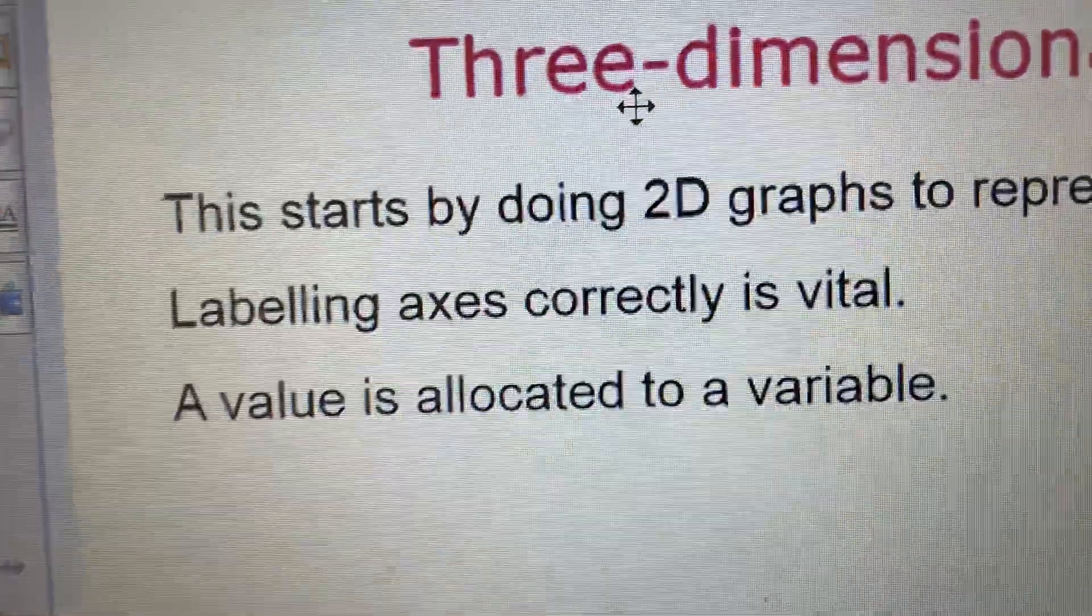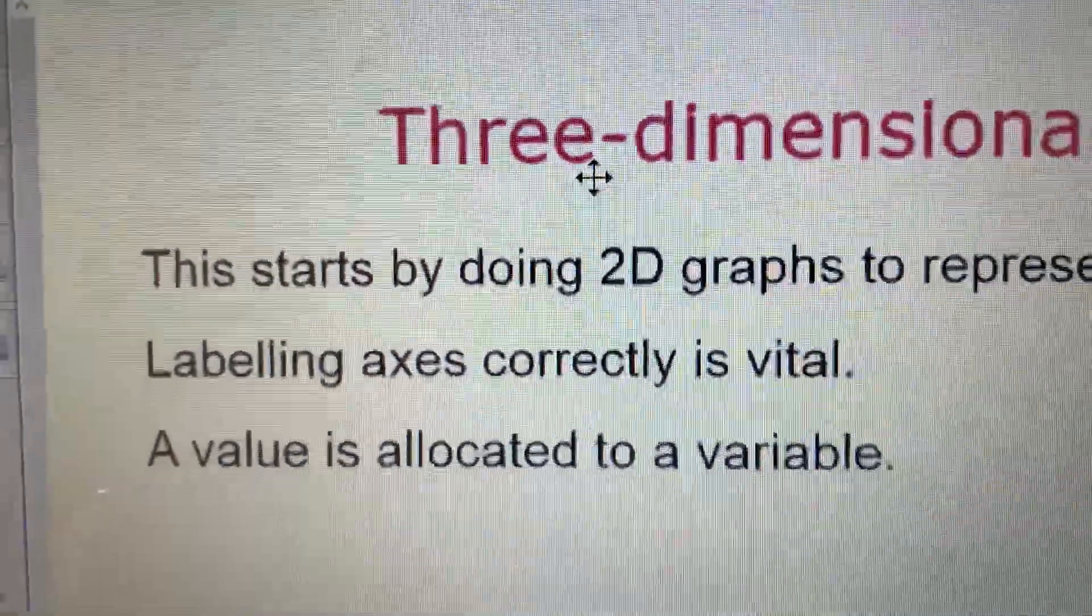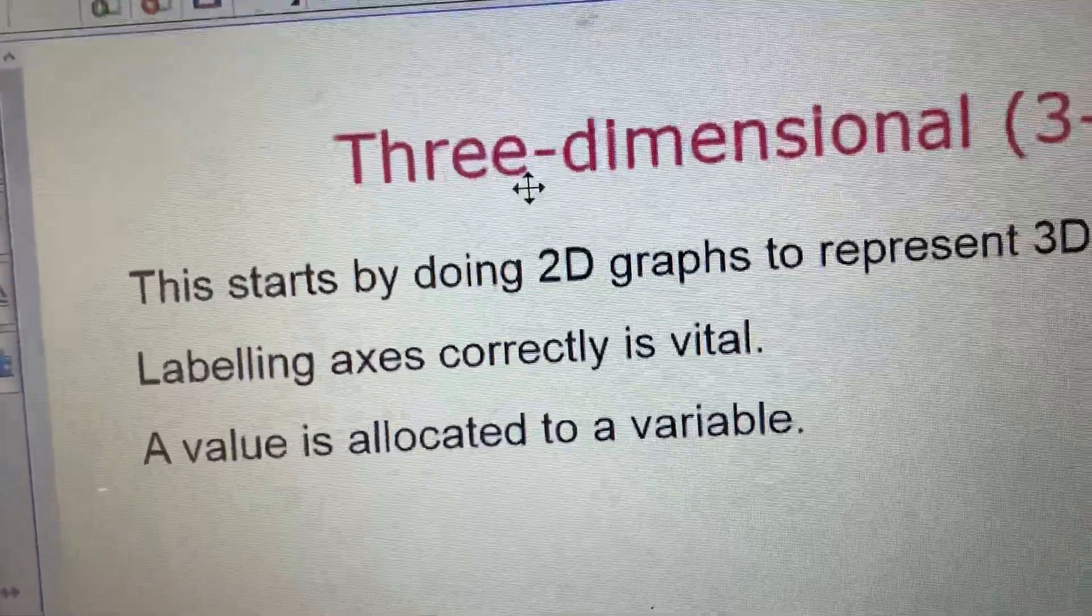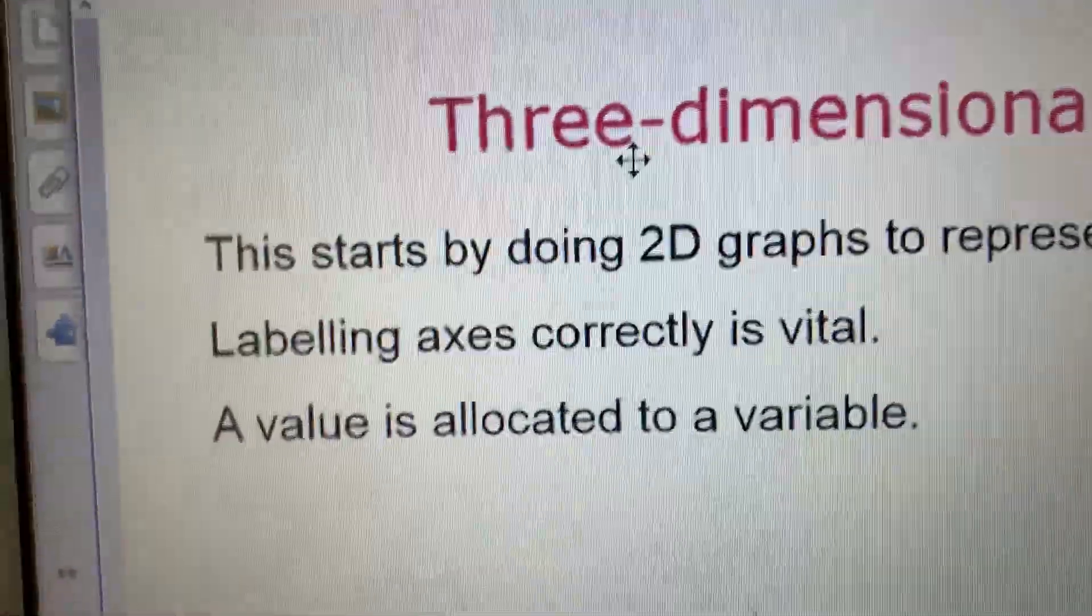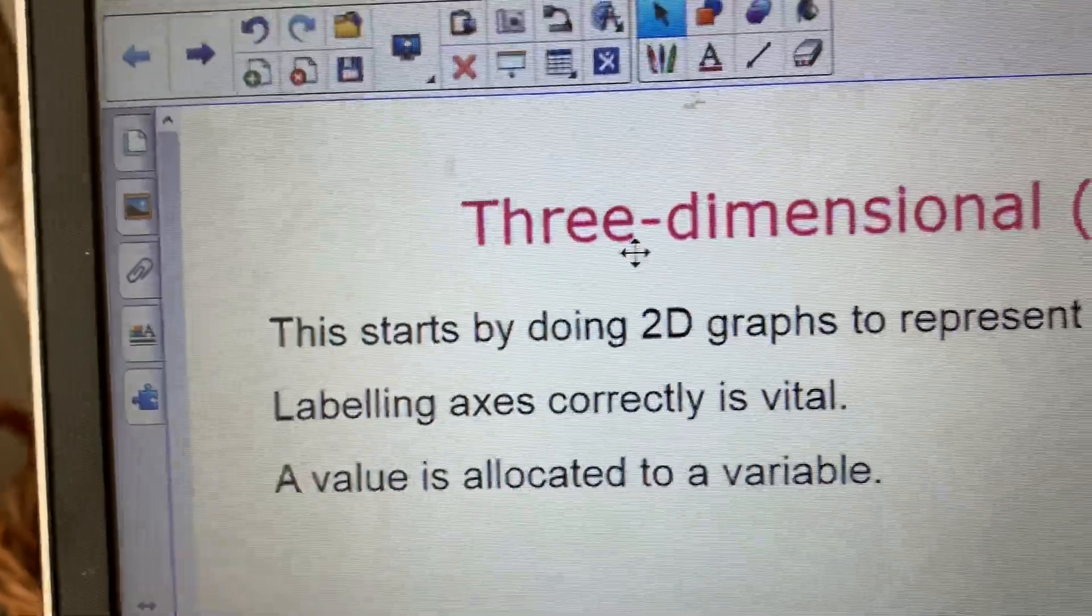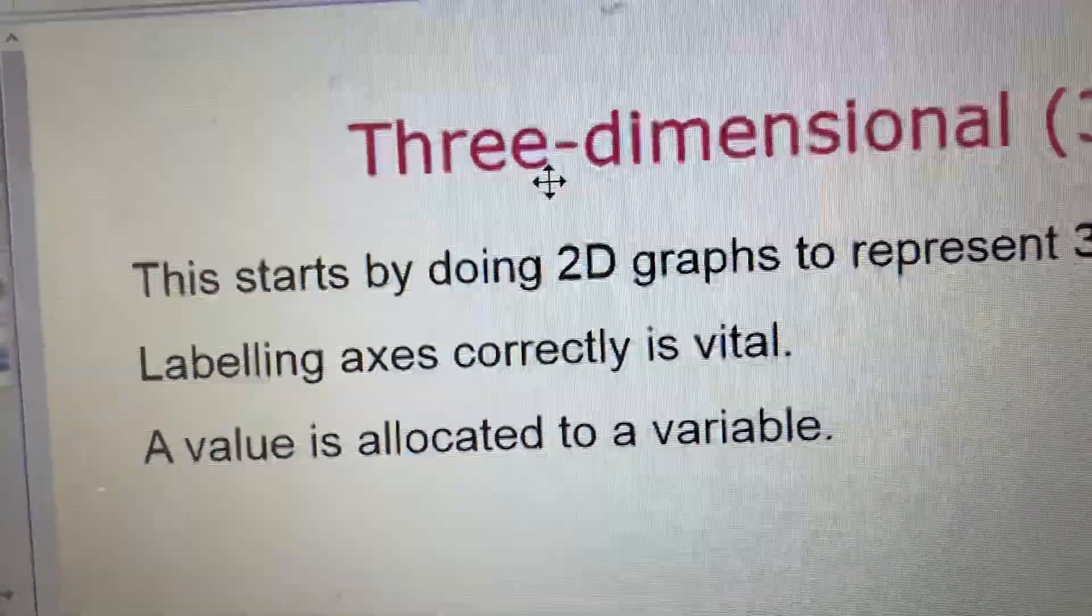And to do this, you allocate a value to a variable. So you're basically going to eliminate either X from your 3D equation or Y from your 3D equation or Z from your 3D equation.